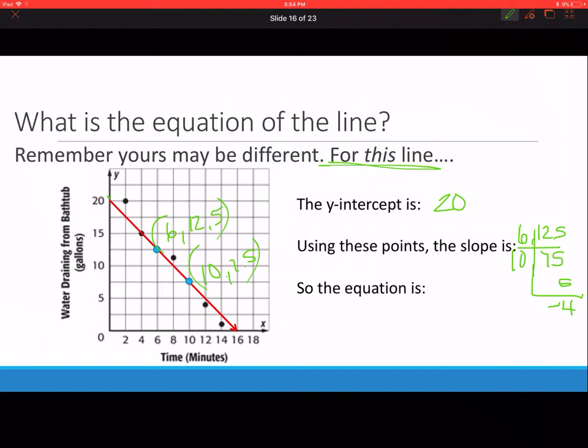So the equation: the y intercept is our b, our slope is our m. The equation is y equals mx plus b. That means y equals negative 5 fourths x plus 20.